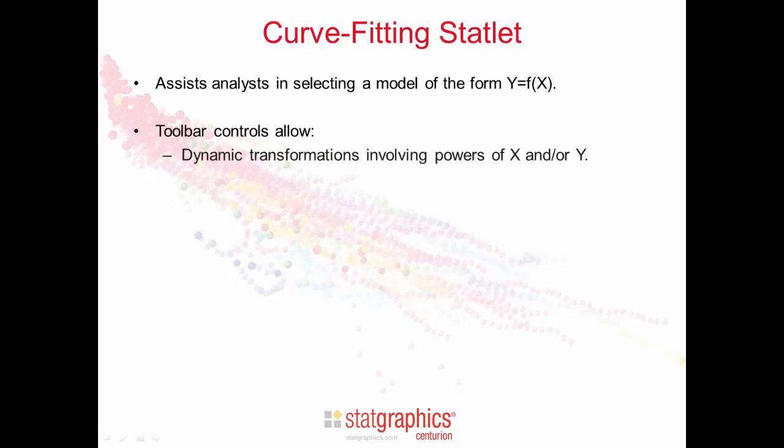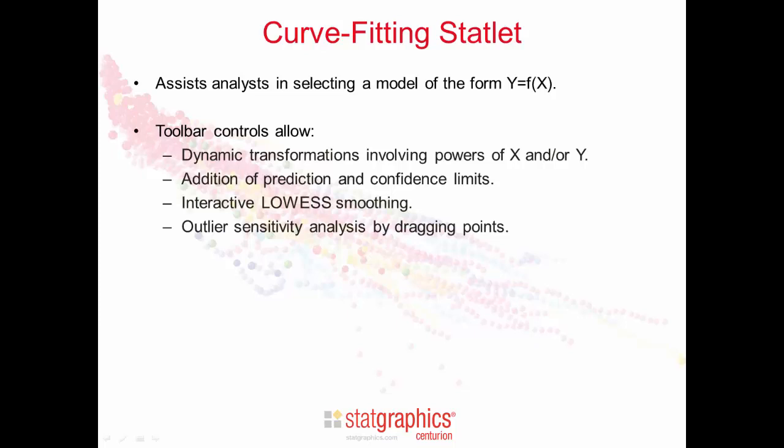The statlet toolbar controls allow dynamic transformations to be applied involving powers of X and or Y. Prediction and confidence limits may be added around the fitted model. Interactive LOESS smooths may be applied to the scatter plot of Y versus X. And finally, the effect of outliers on the fitted model may be assessed by dragging points to new locations.